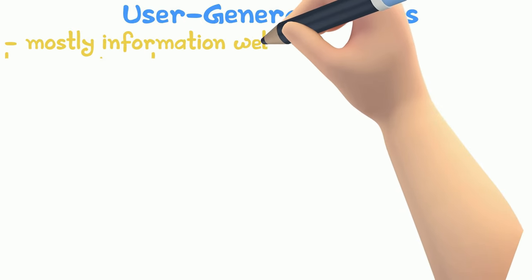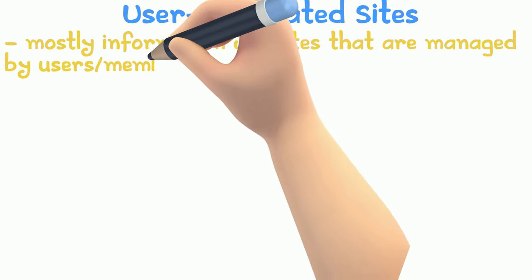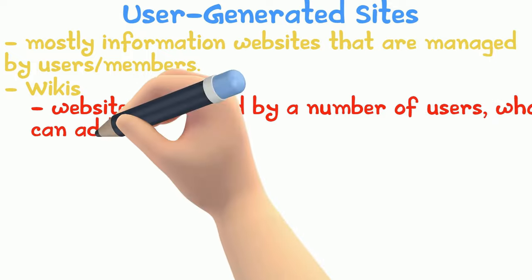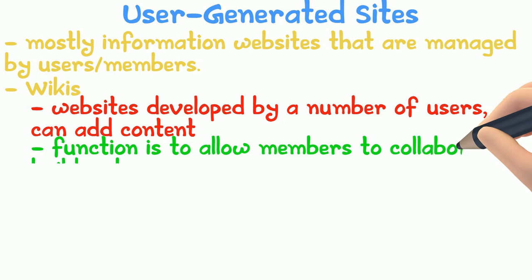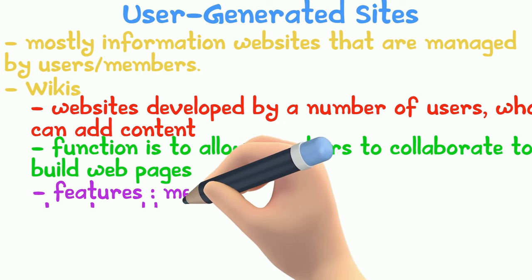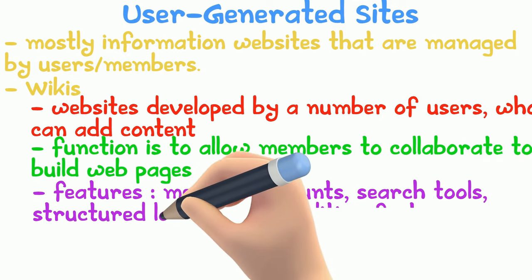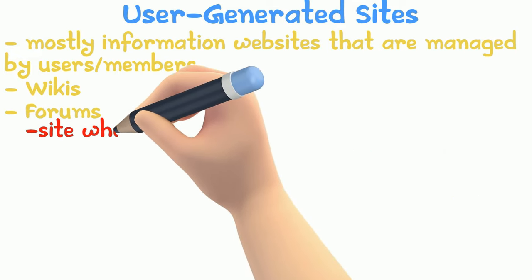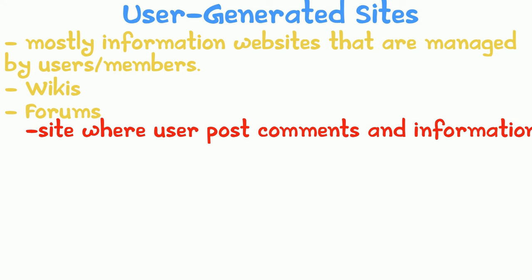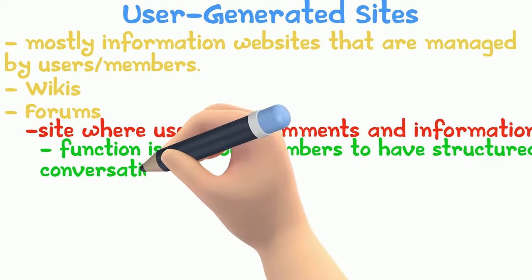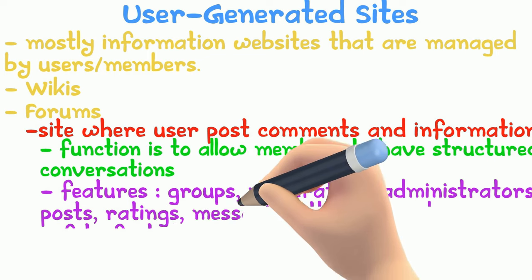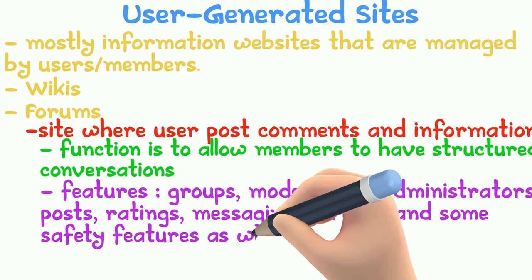User Generated Sites are mostly information websites managed by user members. Wikis are websites developed by users who can add content — the function is to allow members to collaborate to build web pages. Features include member accounts, search tools, structured language, and editing features. Forums are sites where users post comments and information, functioning to allow structured discussion. Forum features include groups, moderators, administrators, posts, ratings, messaging, threads, and safety features.